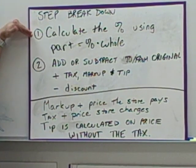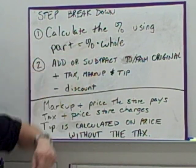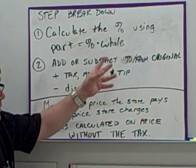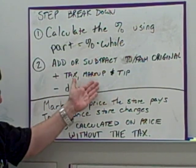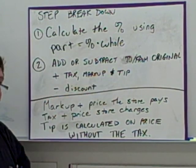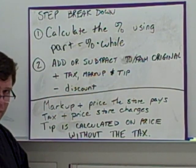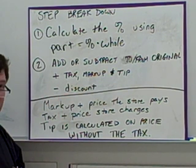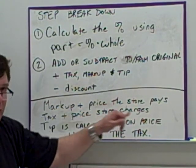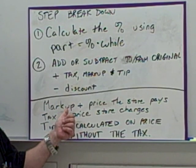The step breakdown: you calculate the percent using the part equals percent times whole, where the percent is a decimal. You add or subtract from the original. If it's tax, markup, or tip, we're going to talk more about tip in the next video. Tax, markup, and tip, you're adding it. If it's discount, you're subtracting.